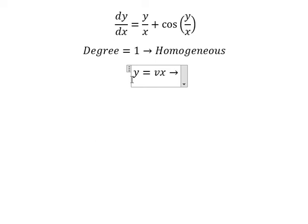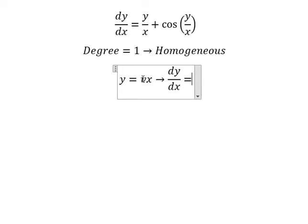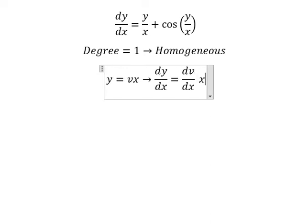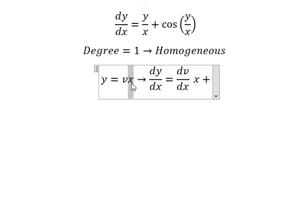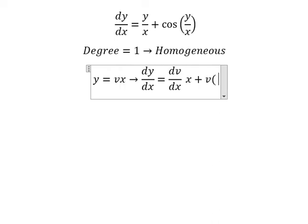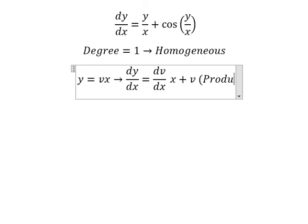And we have dy over dx. This one we have dv over dx multiplied by x, and we have v. This is because we use the product rule for the derivative.